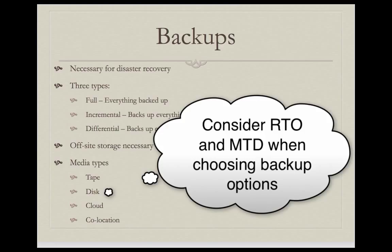How we determine the best way to do backups and keep data available is based on maximum tolerable downtime — how long we can be down before the business suffers irreparable damage. For example, if accounts payable can only be down for one day but your backups can't restore the system that fast, you may want to consider a colo for that system or cloud backups so the database is available by simply flipping over to the cloud resource. These are all things to consider based on recovery time objectives, maximum tolerable downtime, and the potential impact on the business.